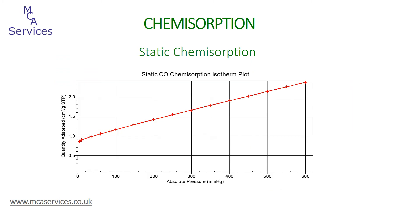We'll start by looking at the static chemisorption method. After the sample has been cleaned and is at the desired analysis temperature — again the furnace is used for this — it is evacuated, and an isotherm of adsorption volume against pressure is collected. This is very similar to the experimental approach used for physisorption analysis. This isotherm shows carbon monoxide adsorption onto a platinum-on-zeolite sample. The isotherm will include two adsorbed carbon monoxide species: physically adsorbed, or physisorbed, which is loosely bound by electrostatic forces; and chemically adsorbed, or chemisorbed, which is more strongly bound by chemical bonds. Once this isotherm has been collected, we'll then apply a vacuum sufficient to remove the more weakly bound physisorbed CO, but insufficient to remove the much more strongly bound chemisorbed CO. The isotherm analysis is then repeated to give a second isotherm, shown here in blue.